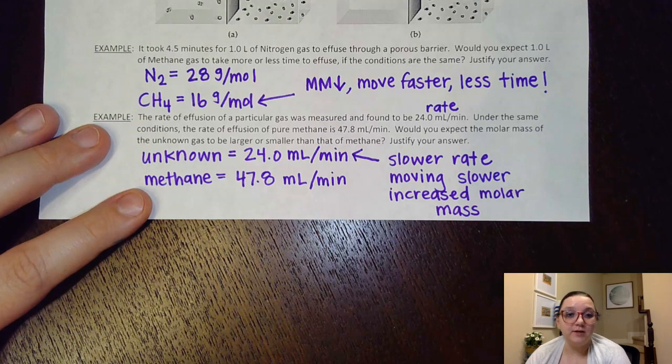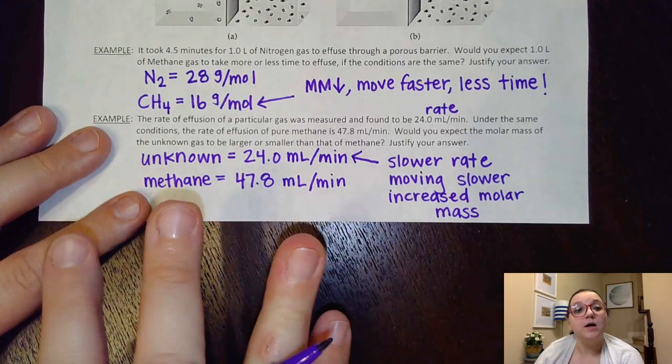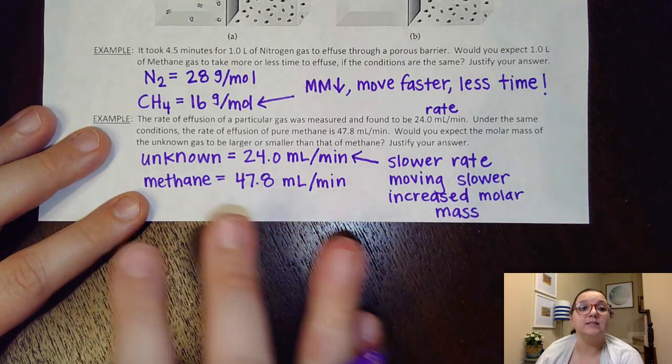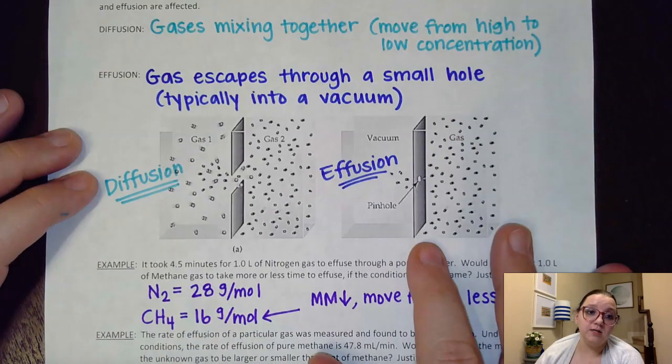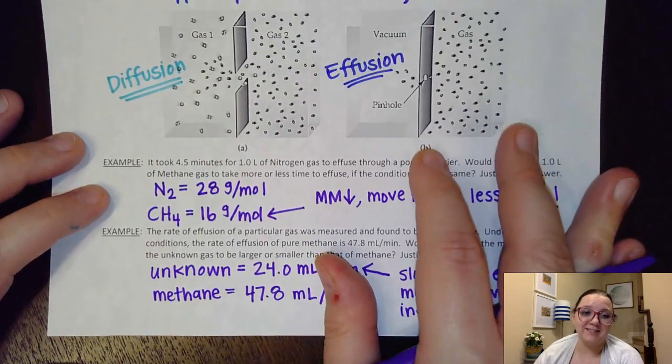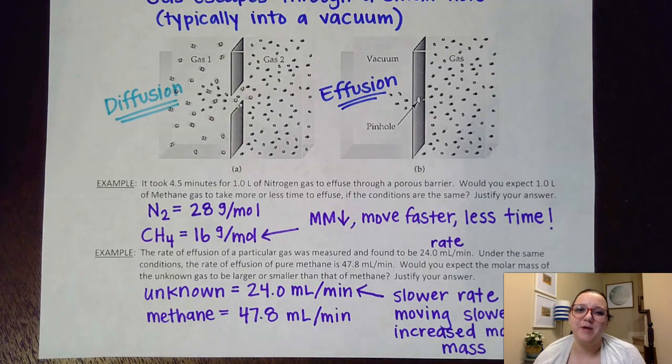All right. Hopefully we're feeling good about understanding Graham's law and we would be able to compare molar masses and rates and speeds to figure out the timing of diffusion and effusion for two different gases. All right. If you have any questions or need any help, please feel free to email me. Bye guys.